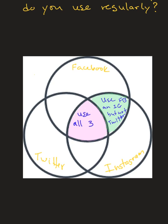Let's look at another section. These people — what two circles are overlapping here? That's Twitter and Instagram, but notice it's not overlapping with Facebook. So how would you describe the people in this area? They use Twitter and Instagram but they don't use Facebook.